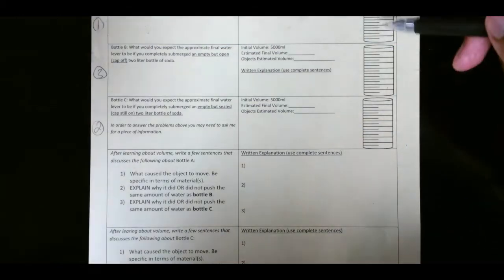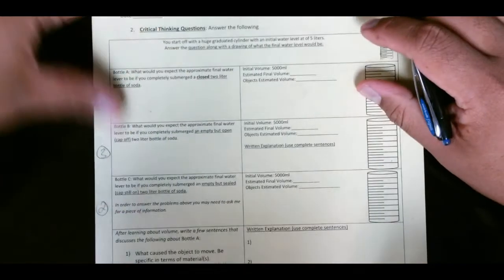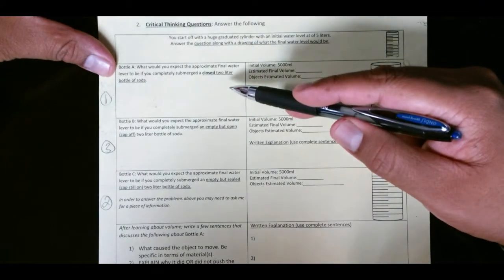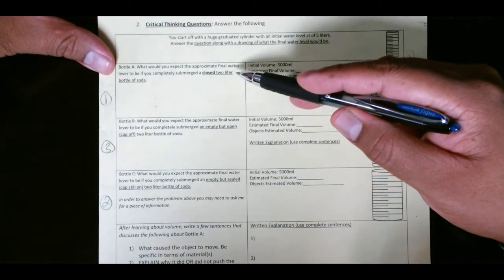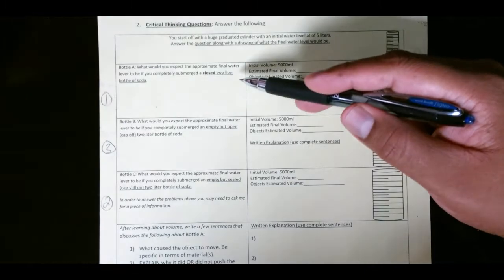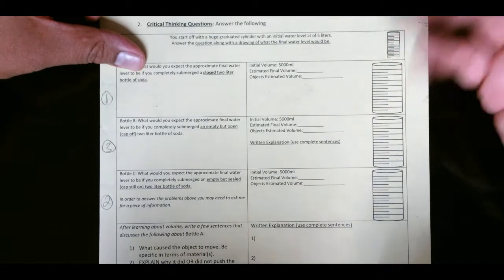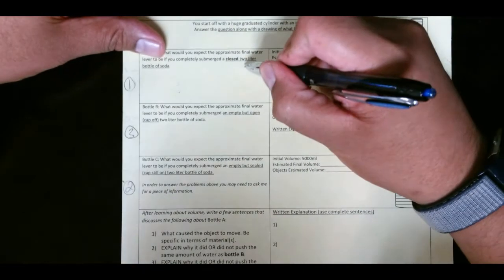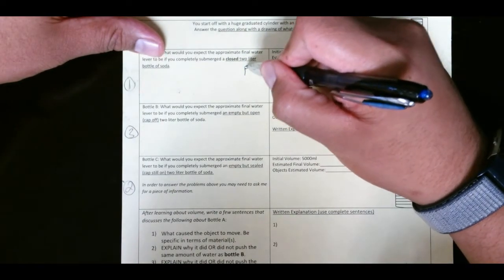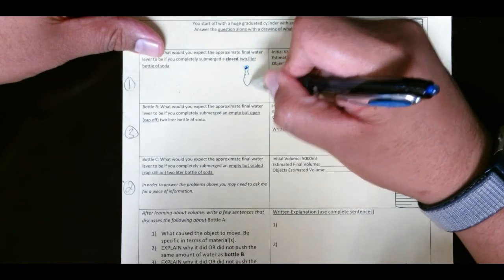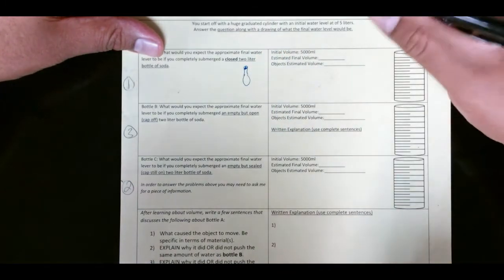Alright, so this is the back part. You don't really need to do the drawing or anything like that. So the first one I ask you, if you have a closed 2-liter bottle of soda that has soda inside of it, you put it into water, it starts off at 5,000, where do you think it'll end up? Well, most of you understand it is a closed 2-liter bottle.